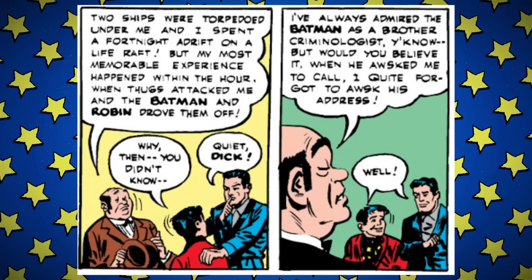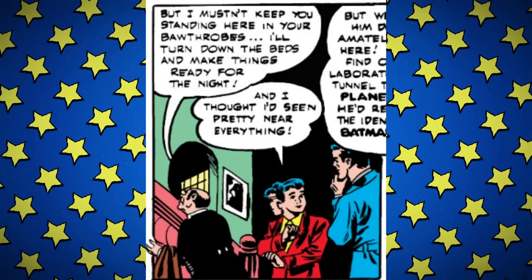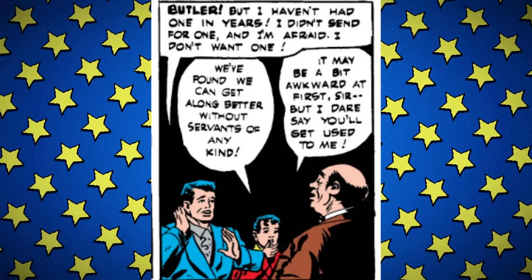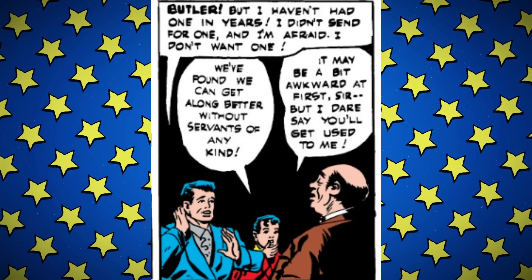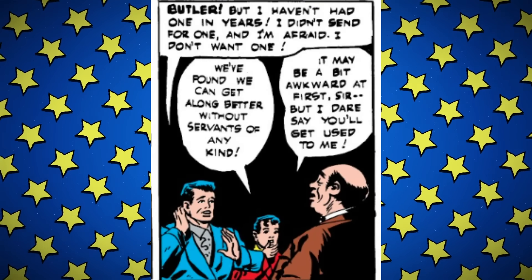Golden Age Robin is something else — the sheer savagery. And of course, as you can glean, who's at the door? It's Alfred. We very much got that classic one-two setup punchline going with the comedy. But it's layered, because Alfred's not there because he figured out who they were — much to their relief — but because he's here to actually work for Bruce Wayne. He shows up and proclaims that he's Bruce's new butler and there's no room for argument. 'I haven't had one in years, I didn't send for one, and I'm afraid I don't want one.' 'It may be a bit awkward at first, sir, but I dare say you'll get used to me.'